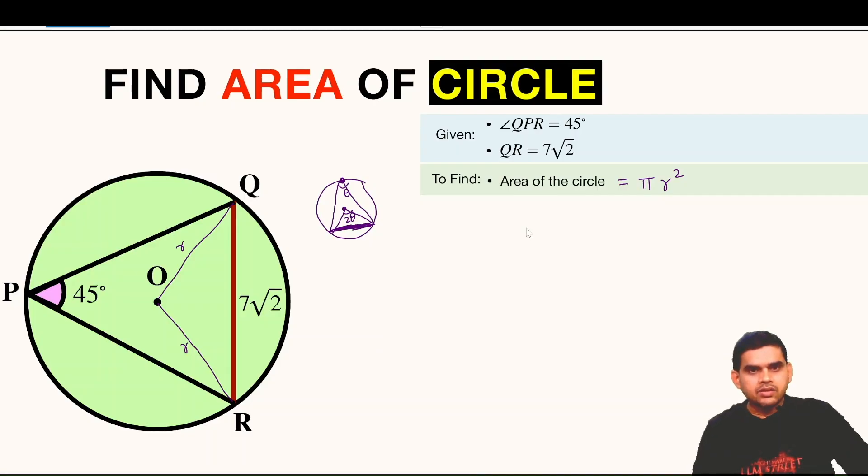QR is that chord which is subtending an angle 45 degrees in the circumference. So at the center this will be a 90 degree angle. Hence we can say that triangle OQR is a right angle triangle. So it will be like this. OQR is a right angle triangle at O.